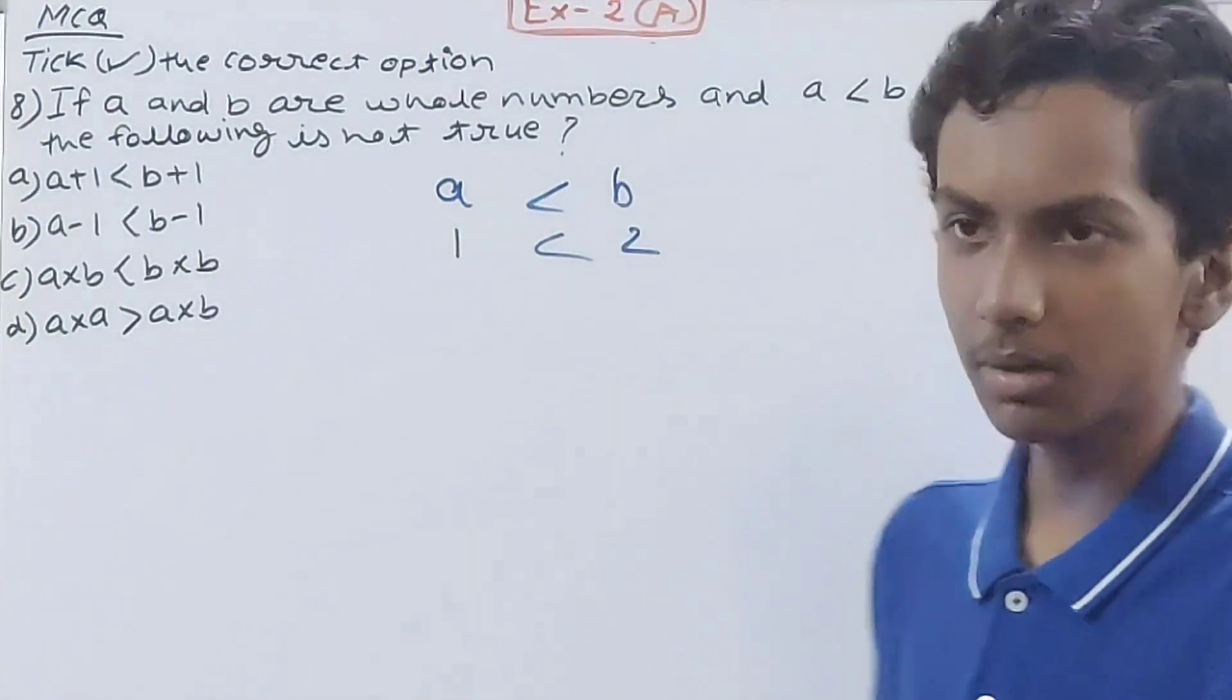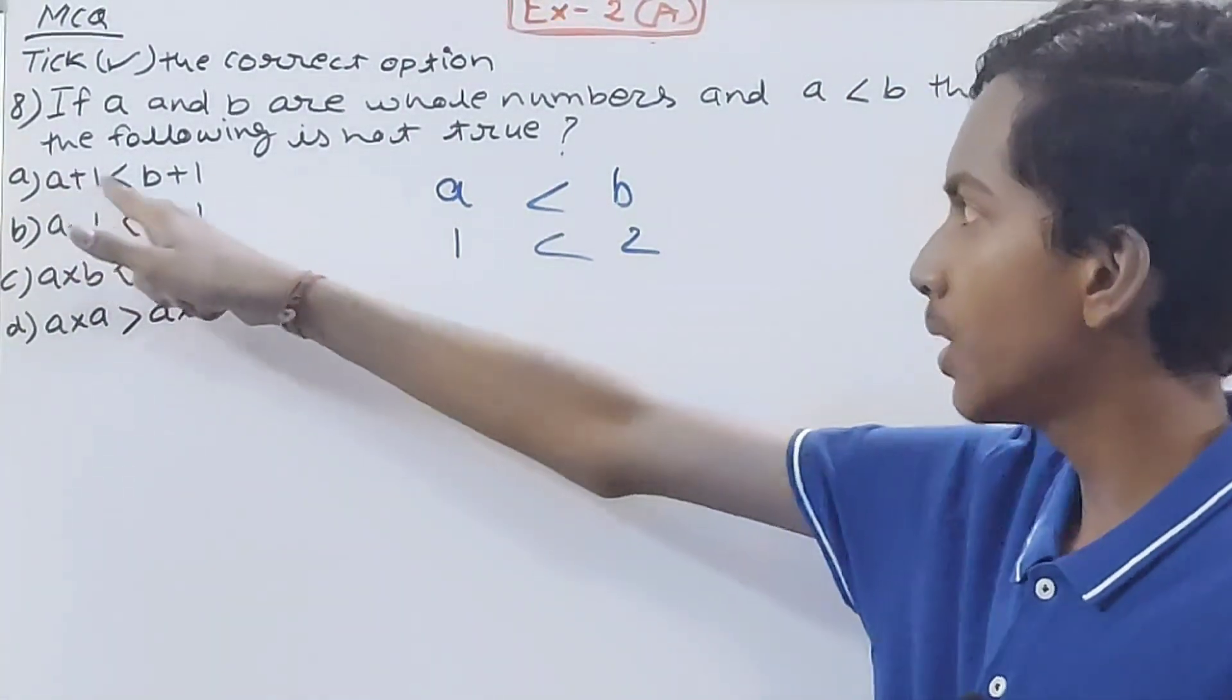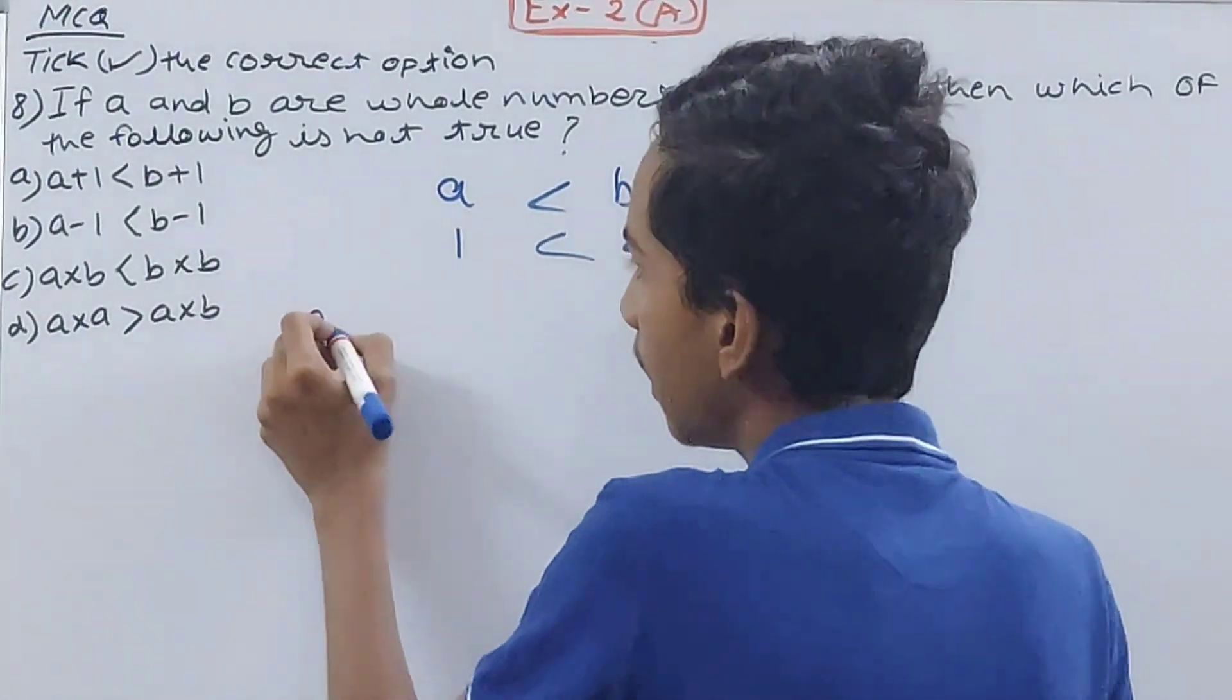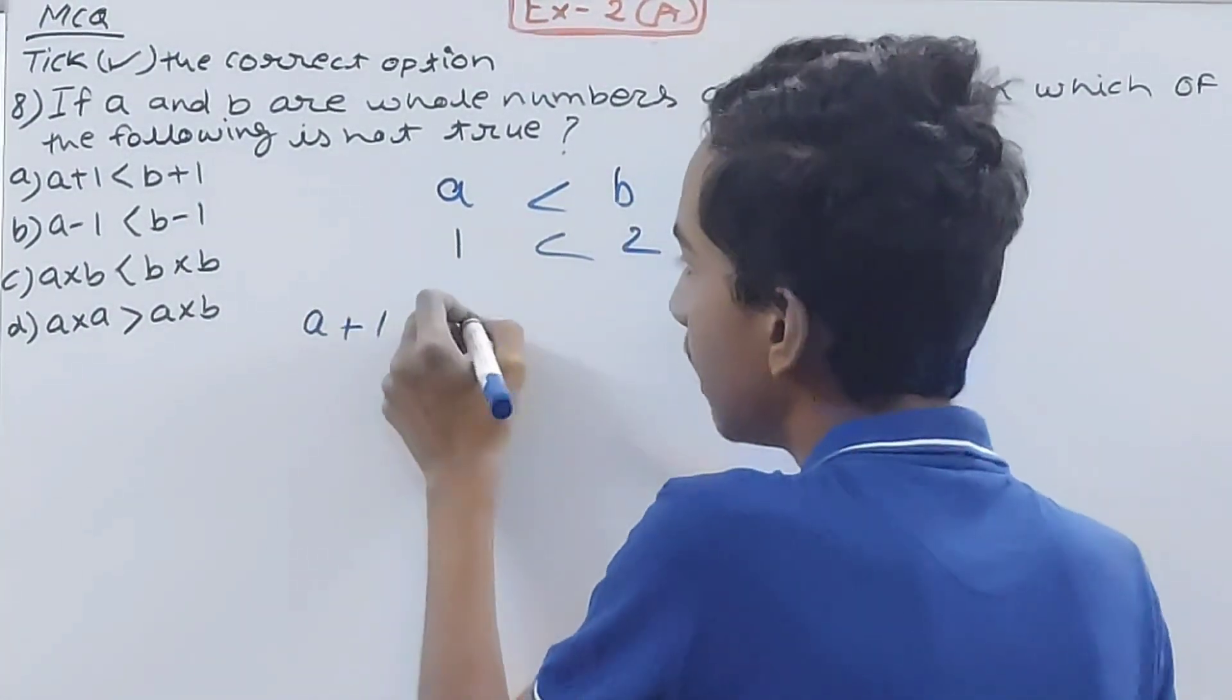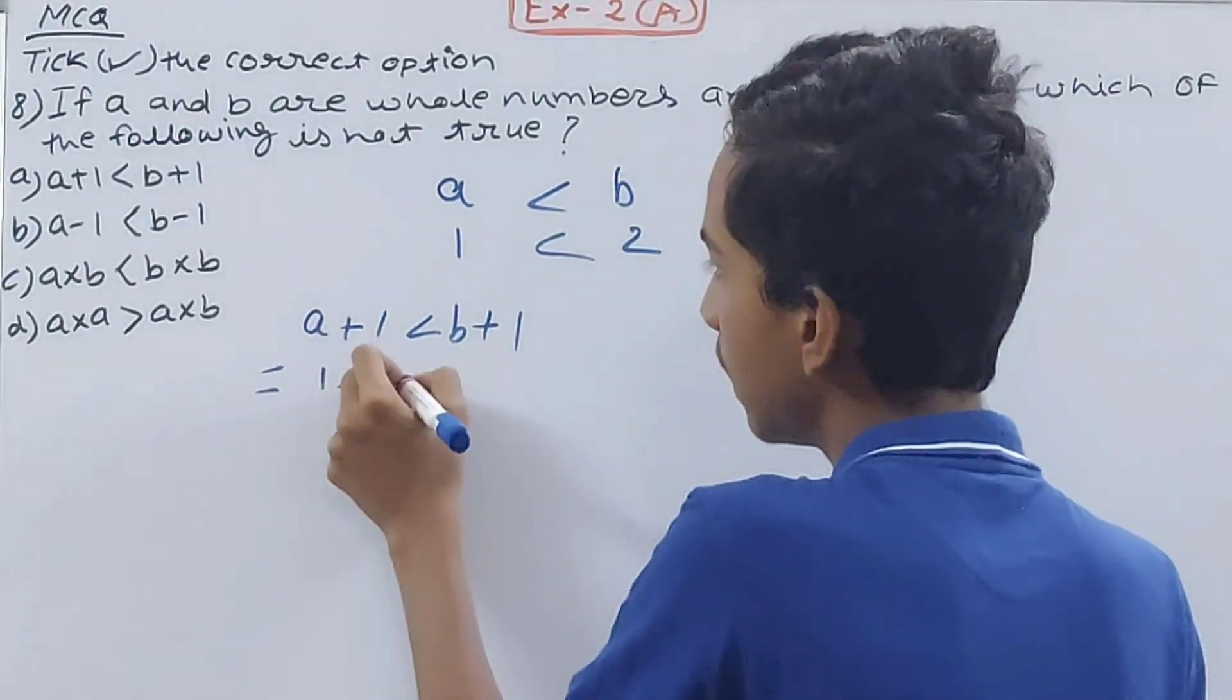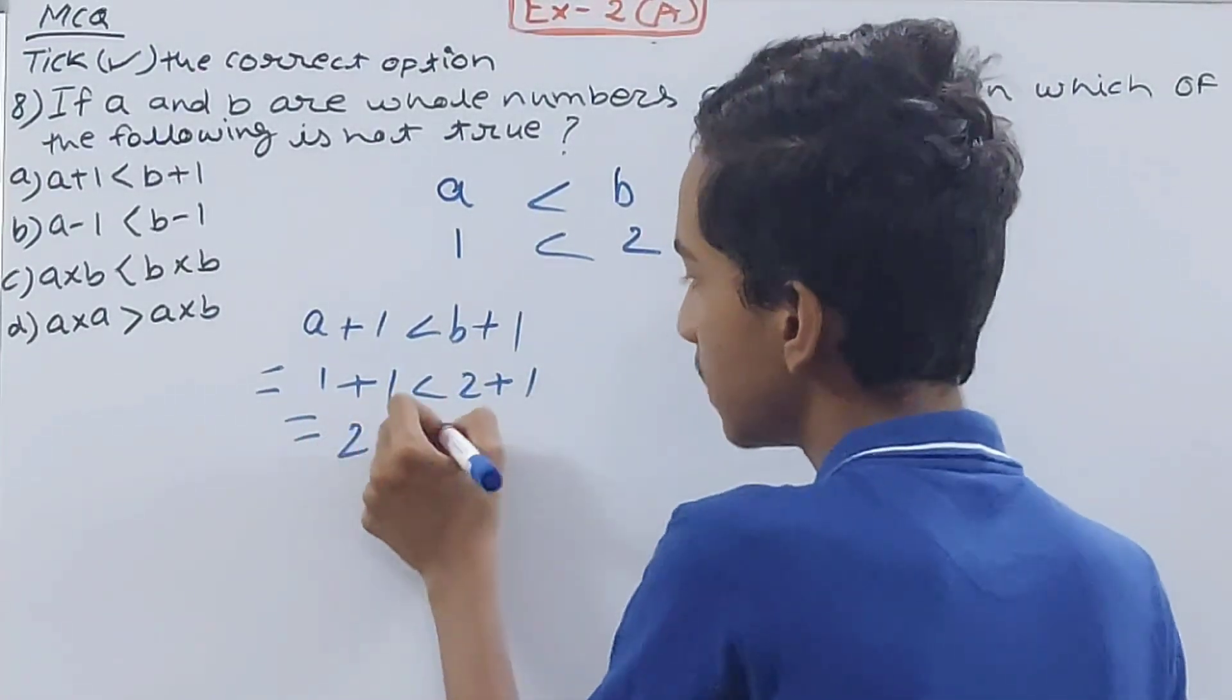First one is a plus 1 is less than b plus 1. Is this true or not? A plus 1, one plus one is less than two plus one. Yes of course, two is less than three. This is true.